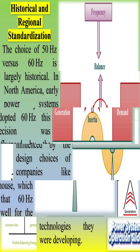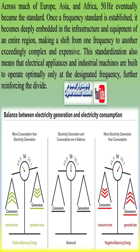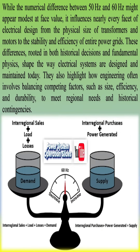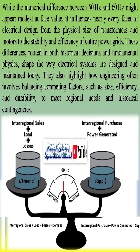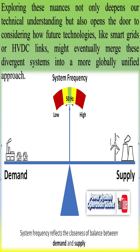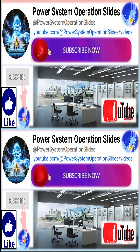Understanding the difference between 50 Hz and 60 Hz in power transmission goes deep into both historical choices and the fundamental physics of alternating current (AC) systems. At its core, these numbers denote the number of cycles per second that the AC waveform completes. A 50 Hz system cycles 50 times per second, while a 60 Hz system completes 60 cycles per second. This may seem like a small change, but it has far-reaching implications for the design, efficiency, and operation of electrical equipment and the overall power grid.